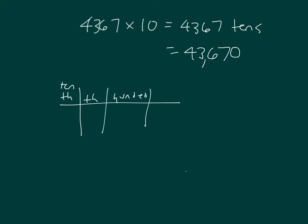Think about what we started with. We started with 4,367 and multiplying by 10 shifted each of those digits to its adjacent place. And we had a 0 as our placeholder in the ones place.